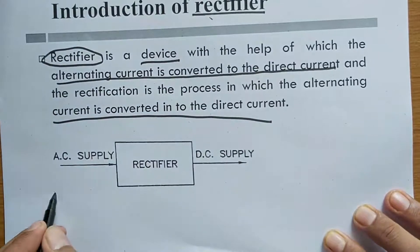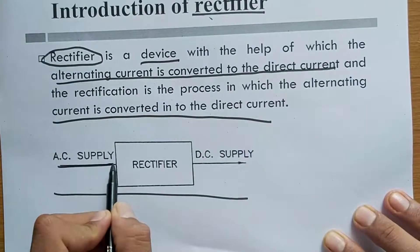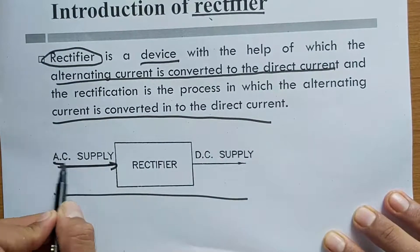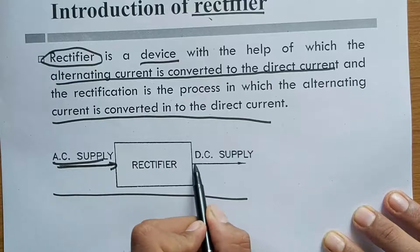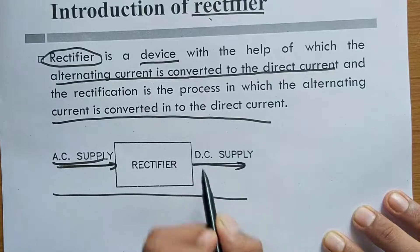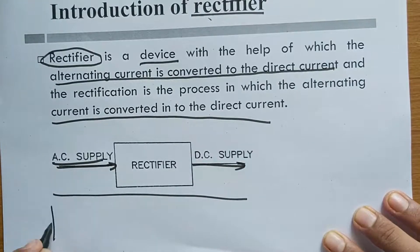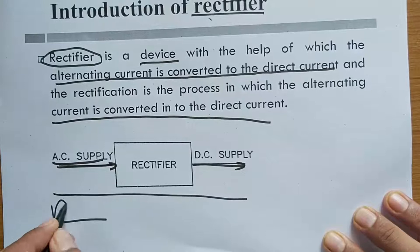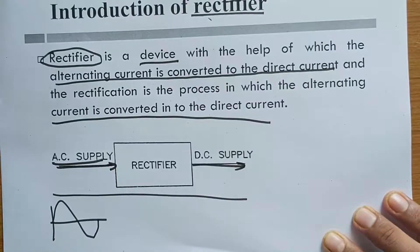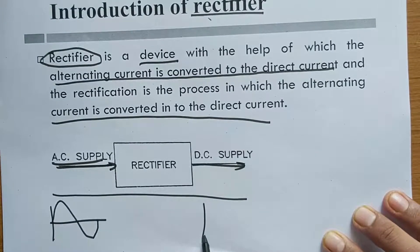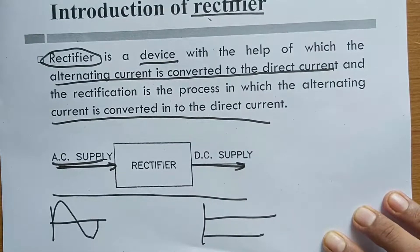We have a block diagram. On one side we have AC supply, and on the other side we have DC supply available. On the input side we have a sine wave supply, and on the output side we have a steady, constant DC current available.